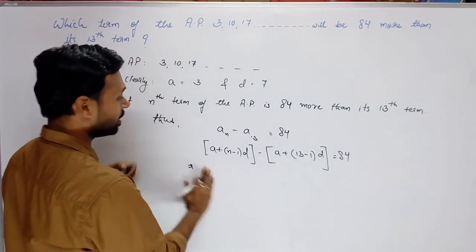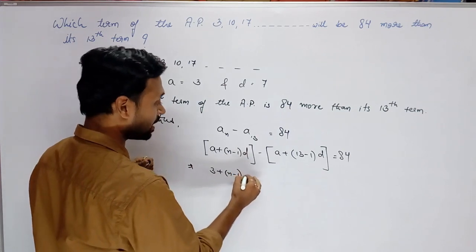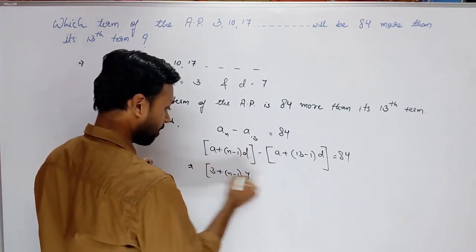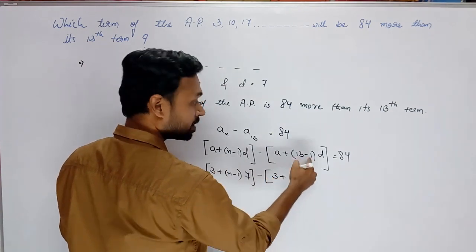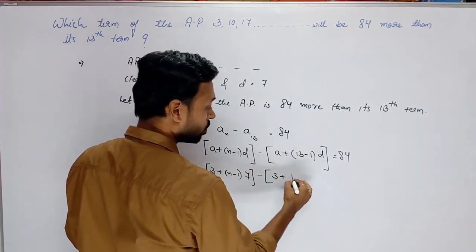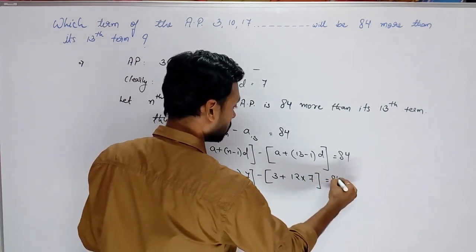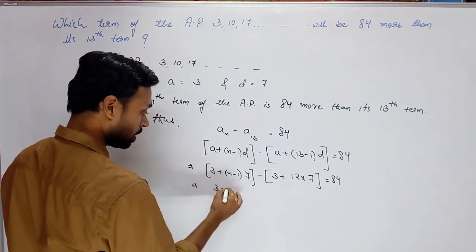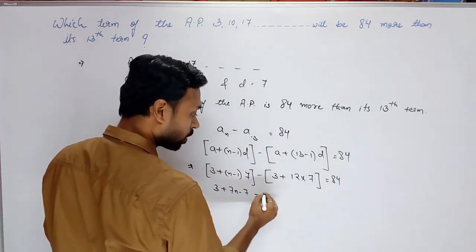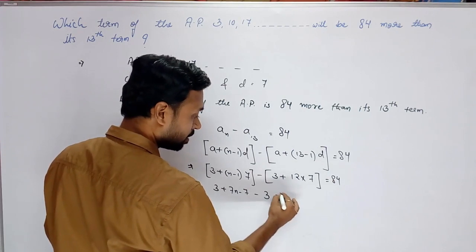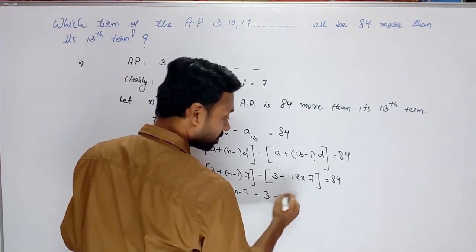a kitna hai? 3. (n minus 1) into d kitna hai — d is 7. Minus: again a is 3, (13 minus 1) is 12, and d is 7, that is 84.